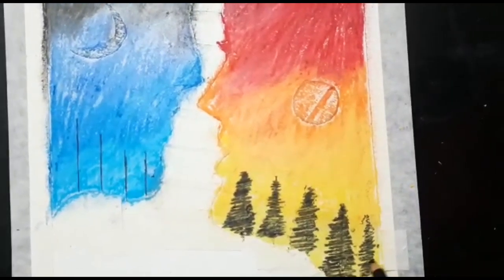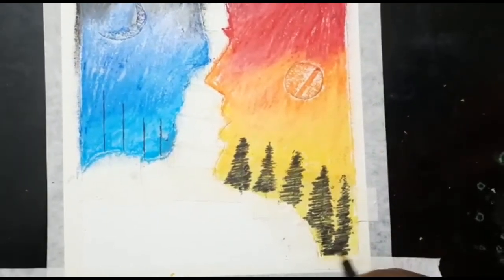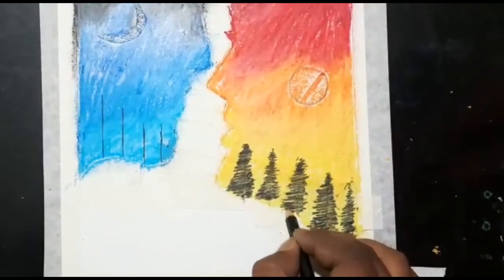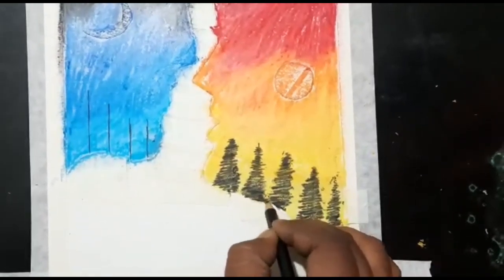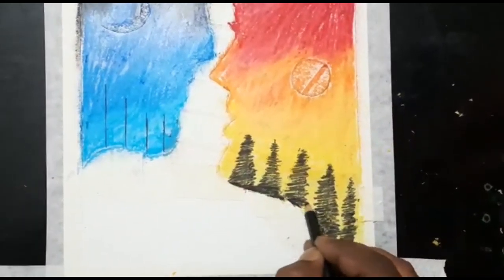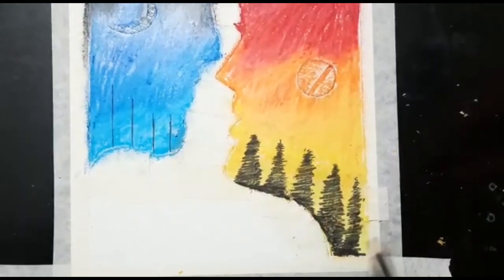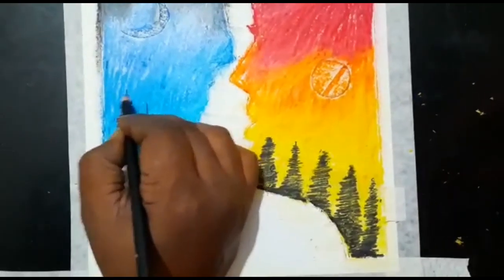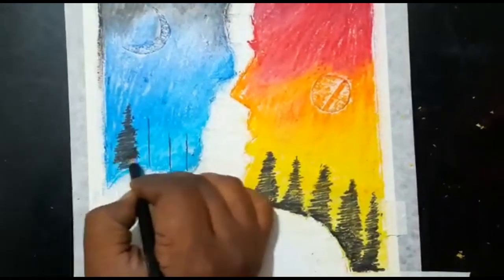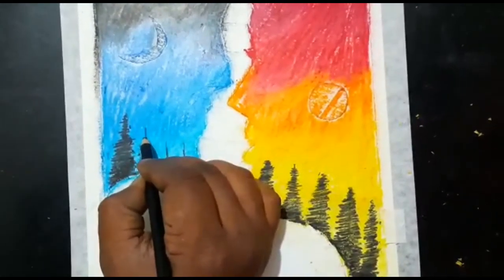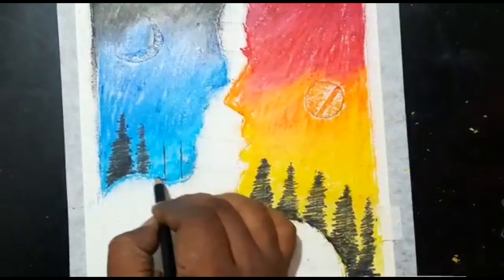So just all the trees have been done this side. Just fill the gaps in between and the edges at the bottom. Now the other side the same way. This picture depicts the day and night, day and night scenery.